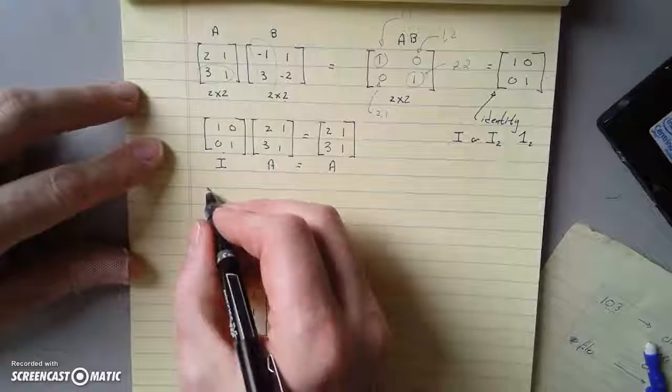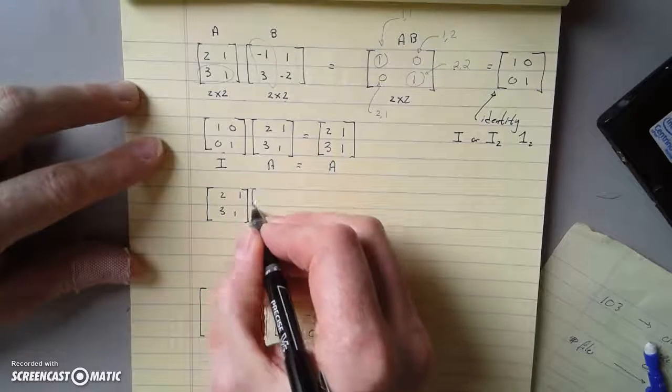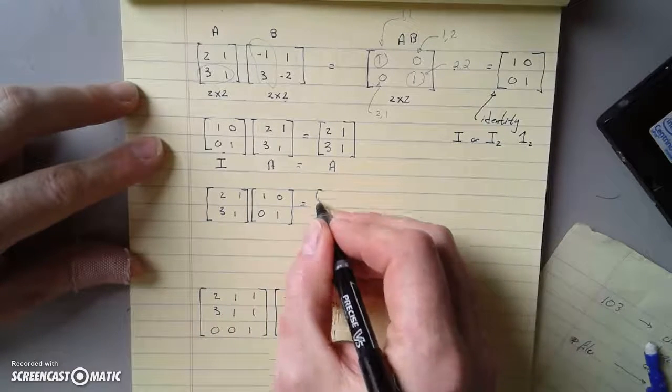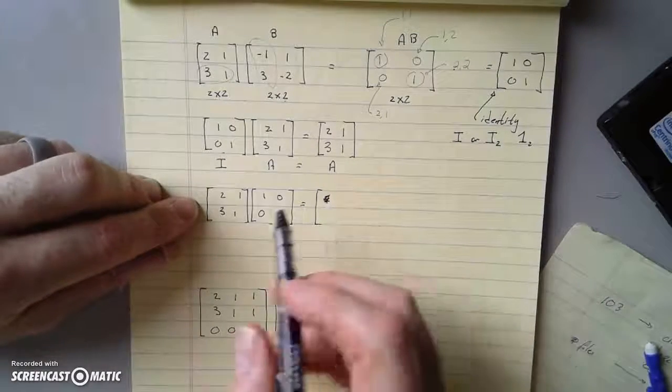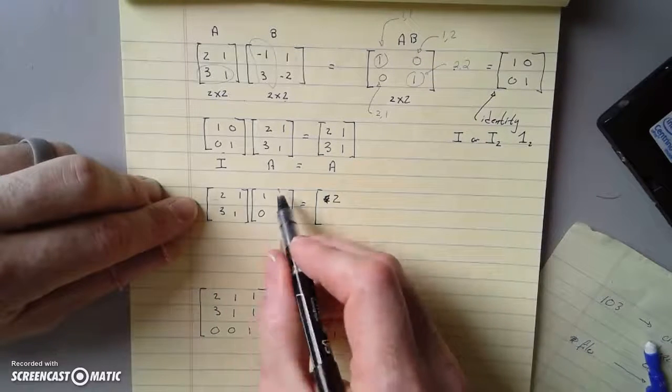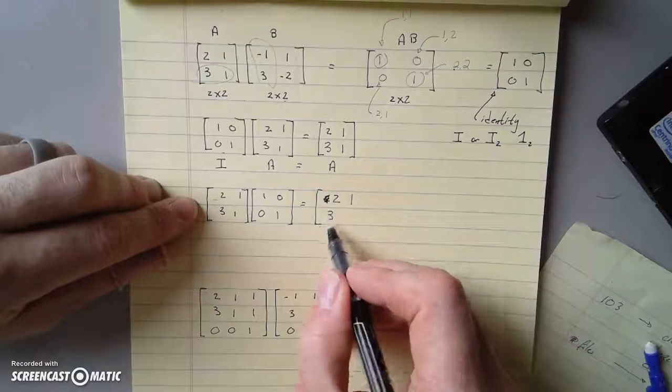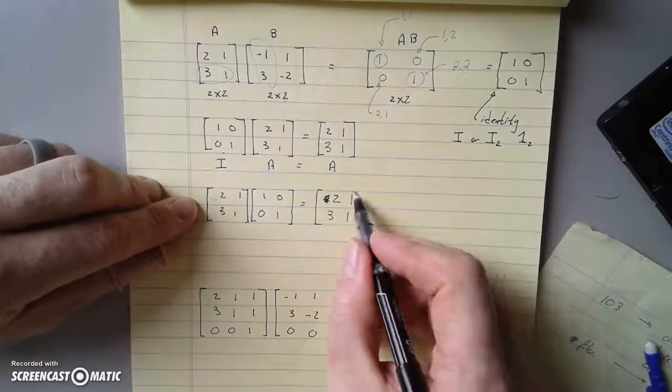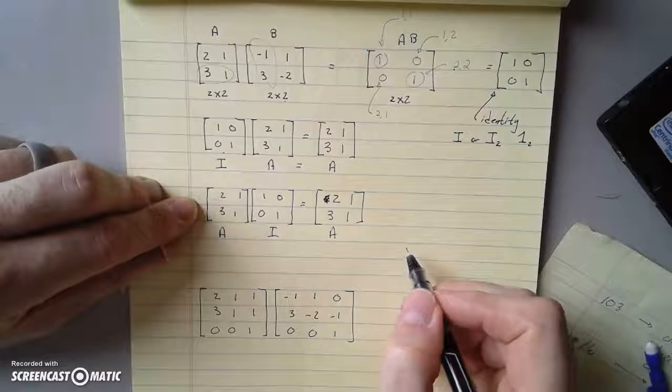What if I change the order? In the previous video, I pointed out that matrix multiplication isn't commutative. That doesn't mean it's always different, it means that it's not always the same. Let's find it. First row, first column, that's a 2. First row, second column, that's a 1. Second row, first column, that's a 3. Second row, second column, it's a 1. What's this? This is A. So A times I is also A.